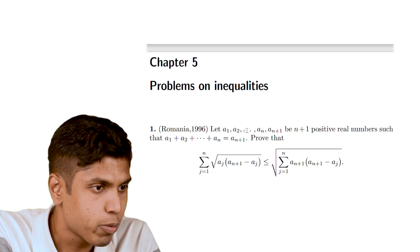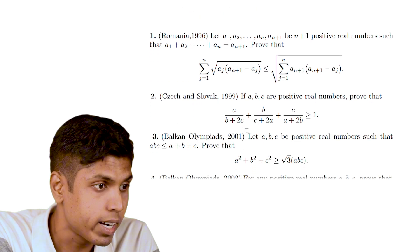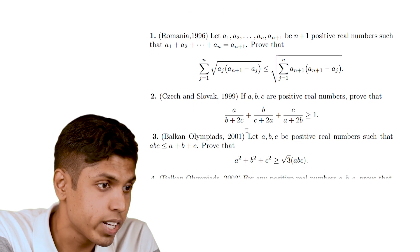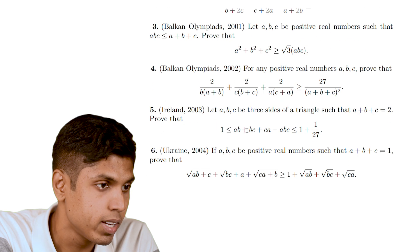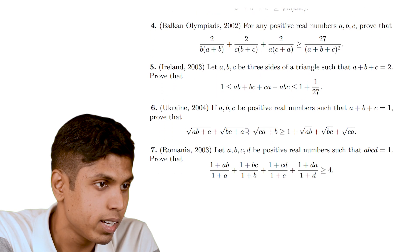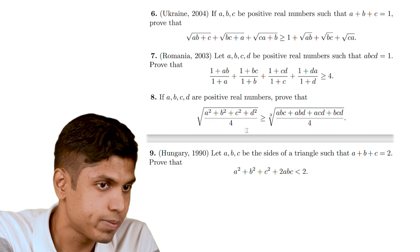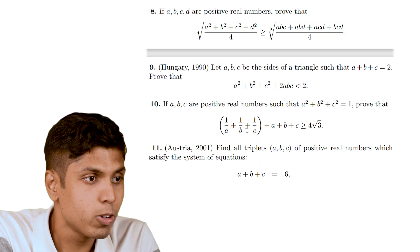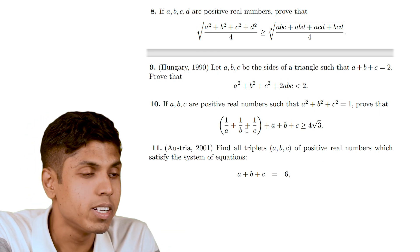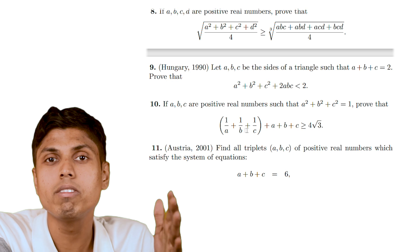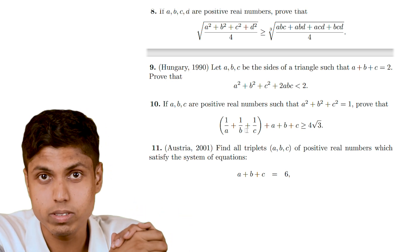So you get problems from Romanian Math Olympiad and Czechoslovakia Olympiad, Balkan Olympiad. So it's a diverse set of collections. Some from Ireland. So the solutions are given in the next section. But do not directly check on them without giving a satisfactory try at these problems.